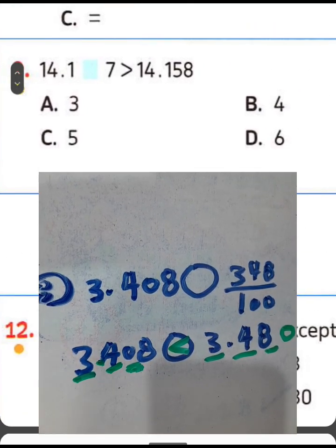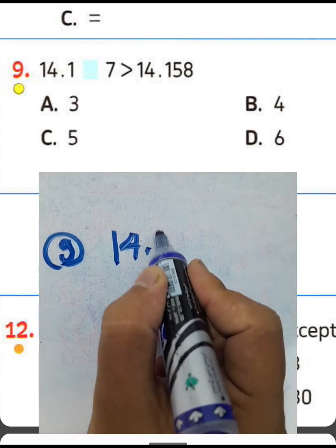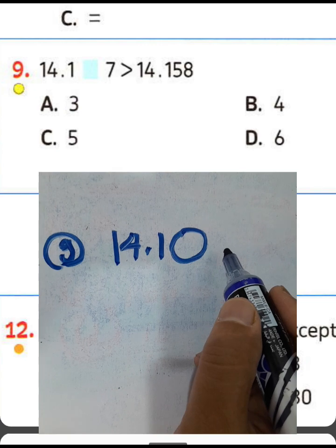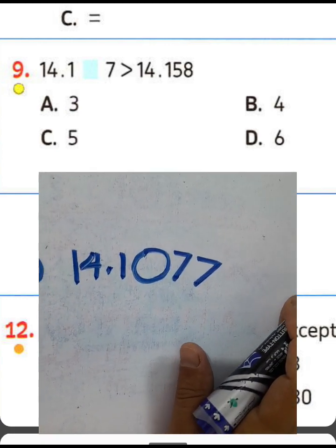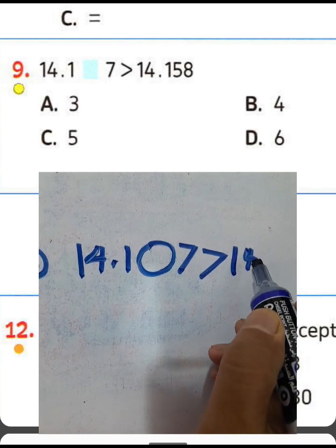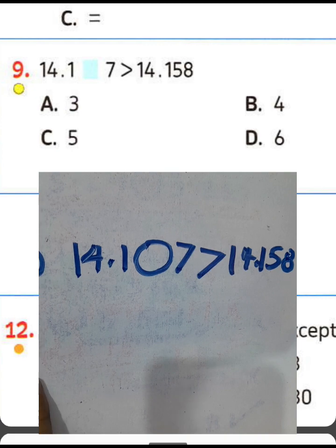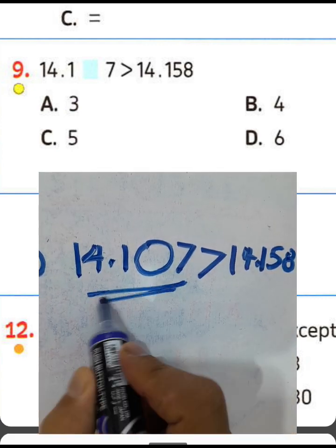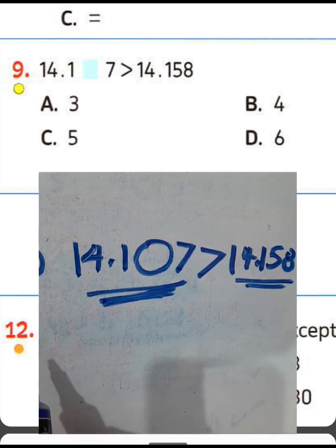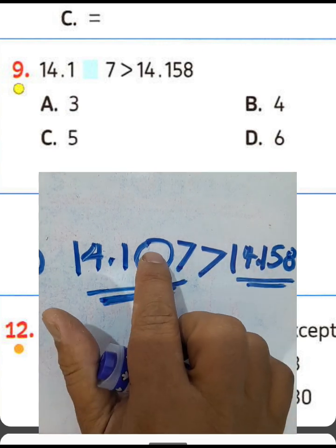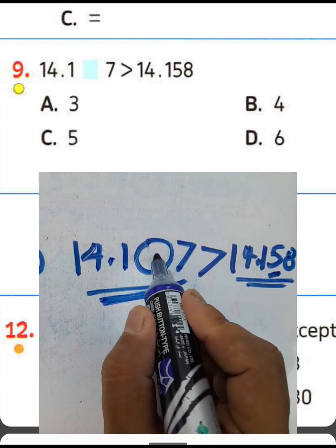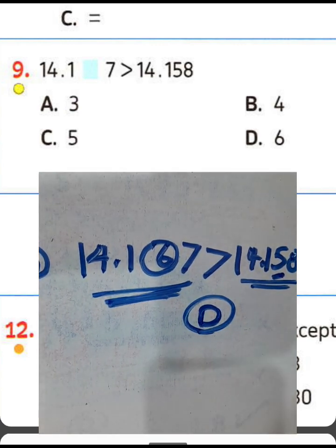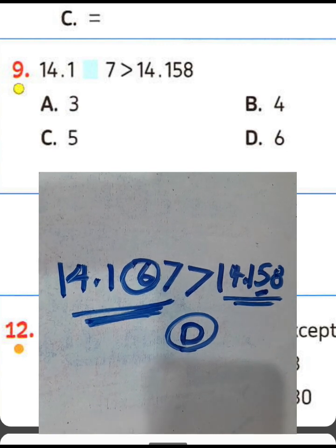Question number nine: 14.1_ is greater than 14.158 — we need to write a digit in the space. 14 equals 14, 1 equals 1, so we must write any digit greater than 5. That would be 6. Write 6 in the space — choose letter D because 6 is greater than 5.